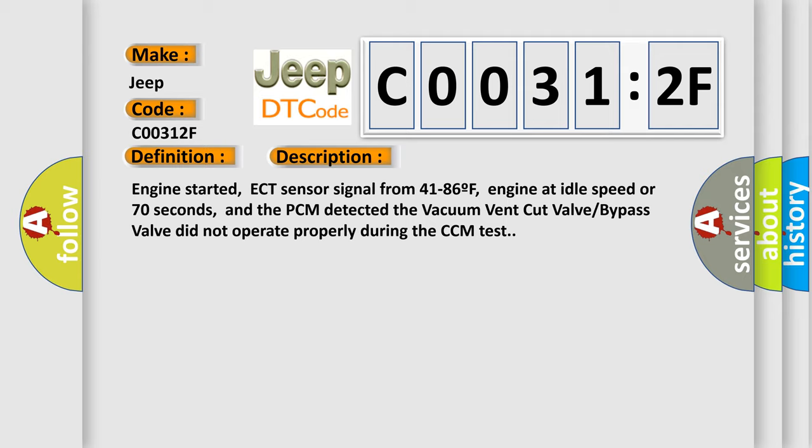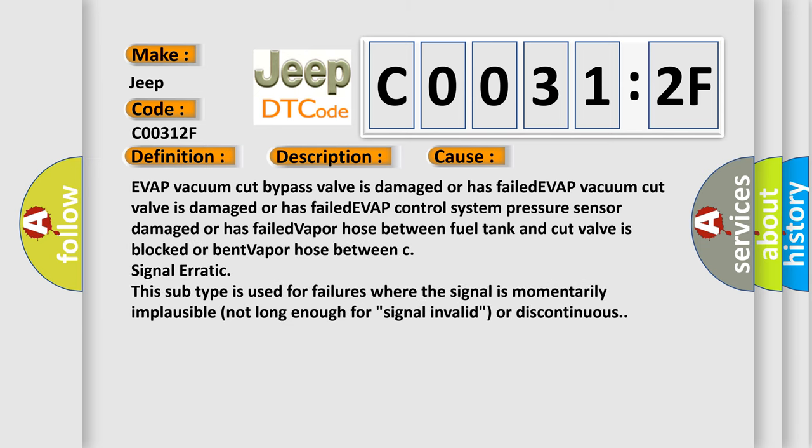This diagnostic error occurs most often in these cases: EVAP vacuum cut bypass valve is damaged or has failed, EVAP vacuum cut valve is damaged or has failed, EVAP control system pressure sensor damaged or has failed, vapor hose between fuel tank and cut valve is blocked or bent, vapor hose signal erratic. This subtype is used for failures where the signal is momentarily implausible, not long enough for signal invalid or discontinuous.